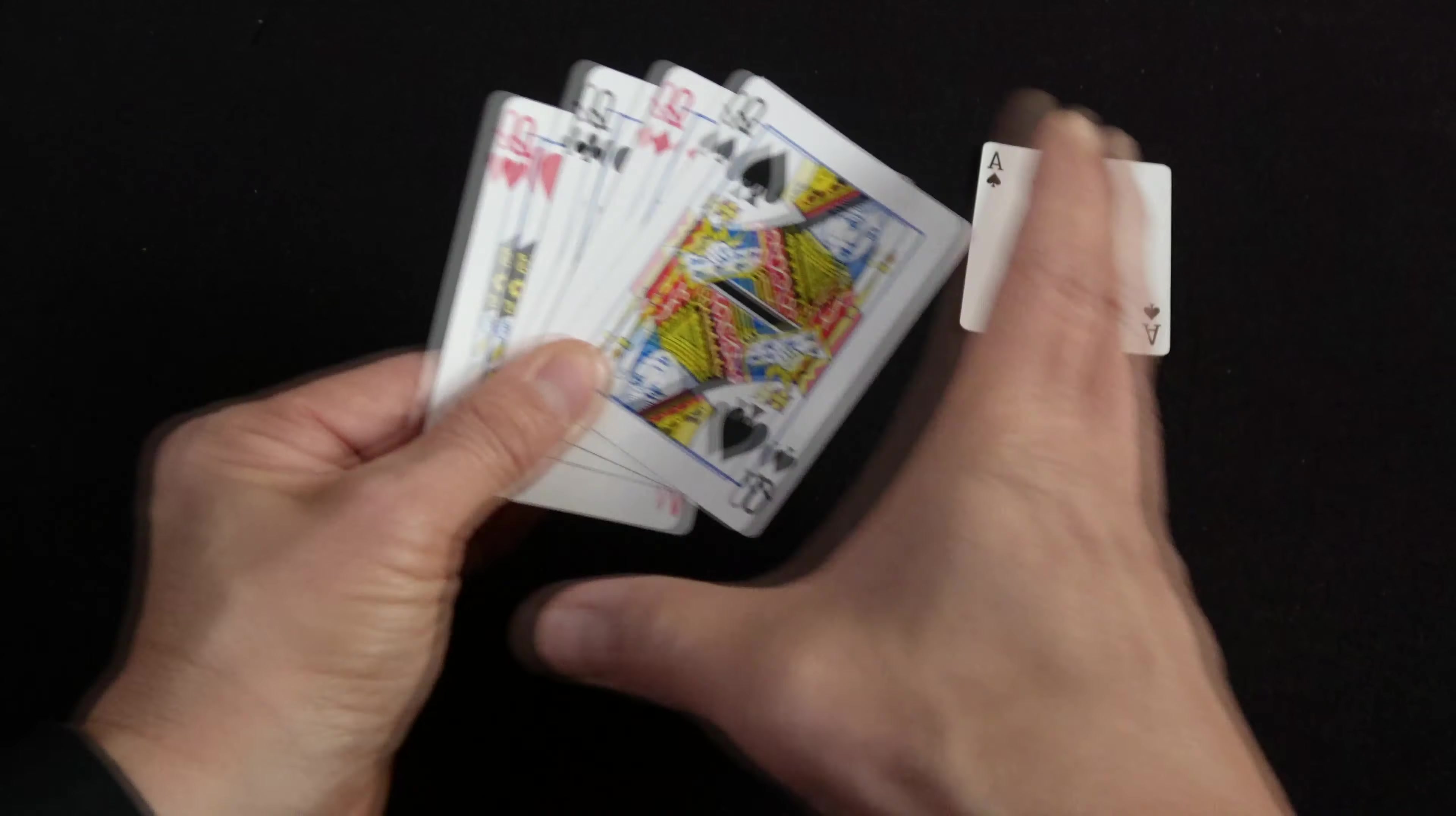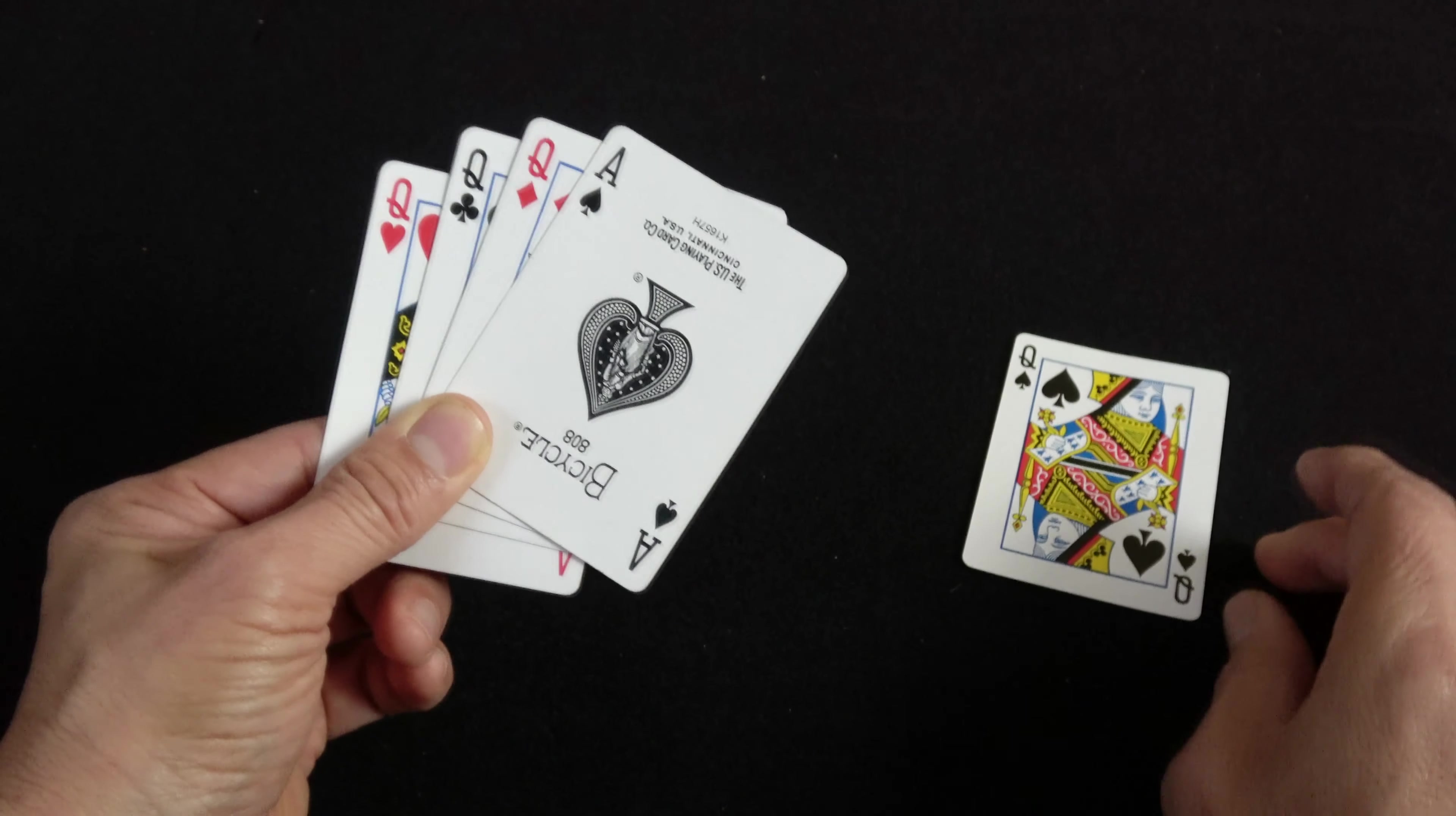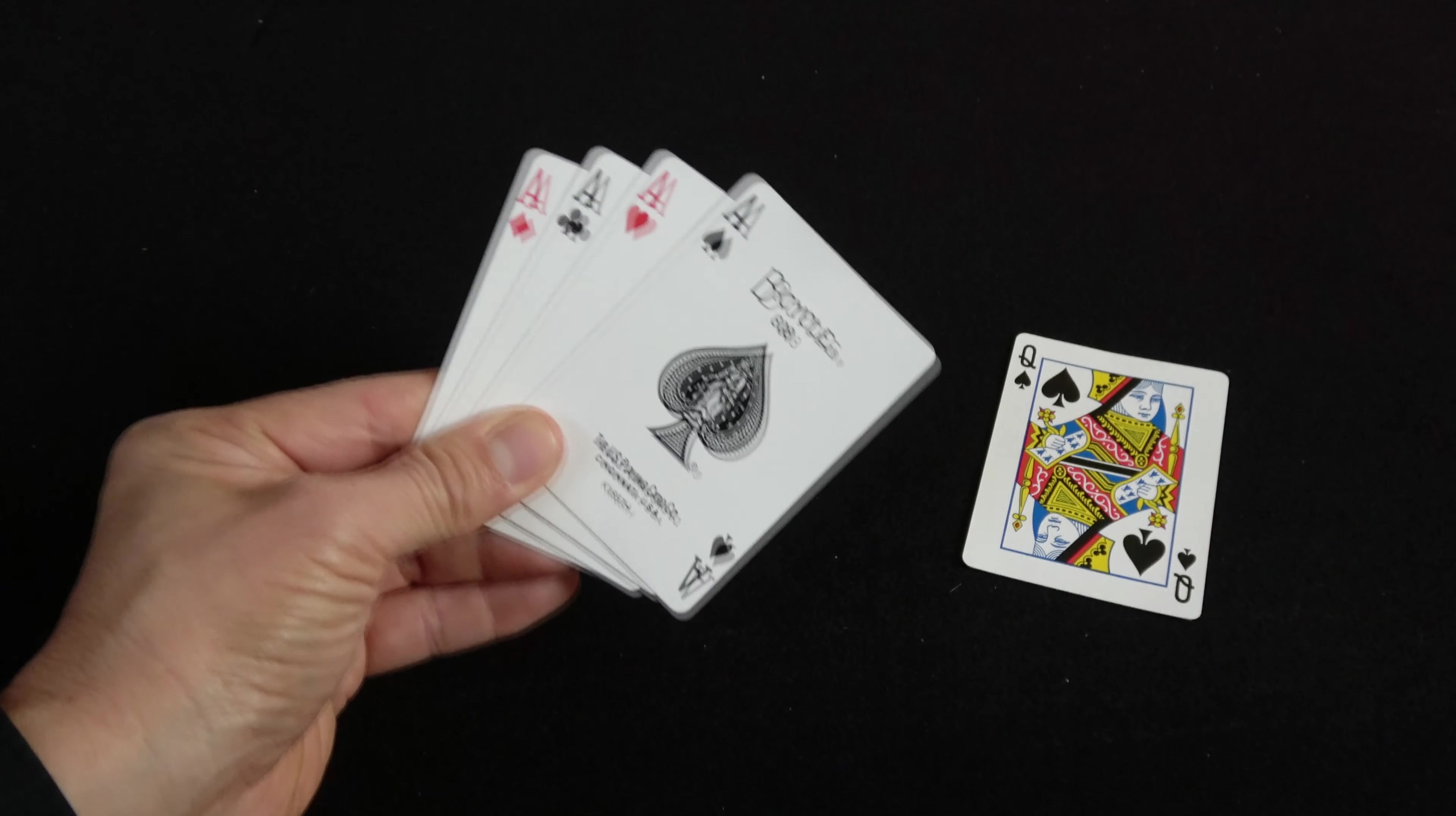Display the cards, take the ace, place it right behind the queen, remove the queen, close it, spin it, give it a little shake, and spread it in the same way. Now you'll show four aces.